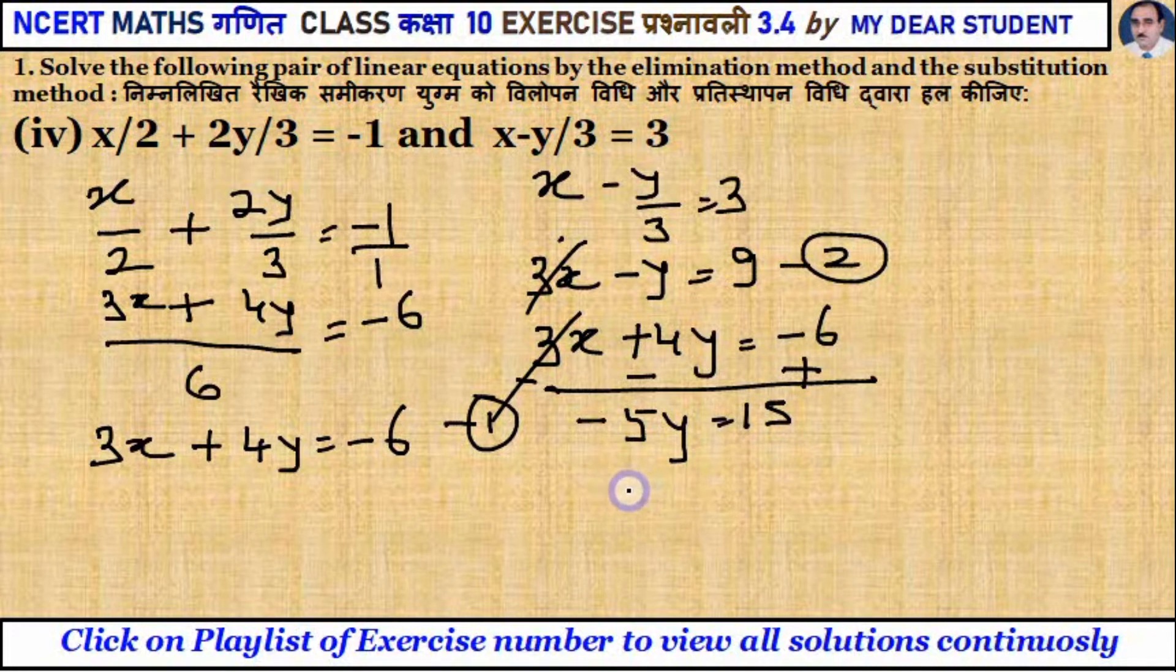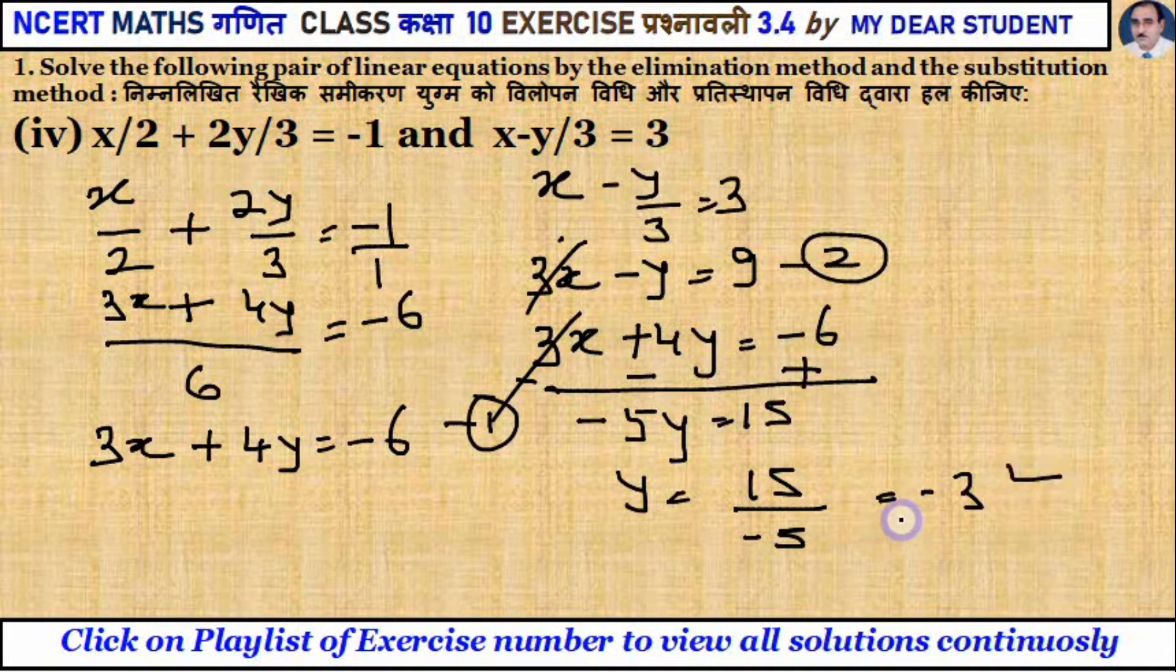Then y is equal to 15 divided by minus 5. Now you have 5 in 15, and minus will be minus. So this is your answer minus 3. Minus 3 is the y value. y is equal to minus 3.